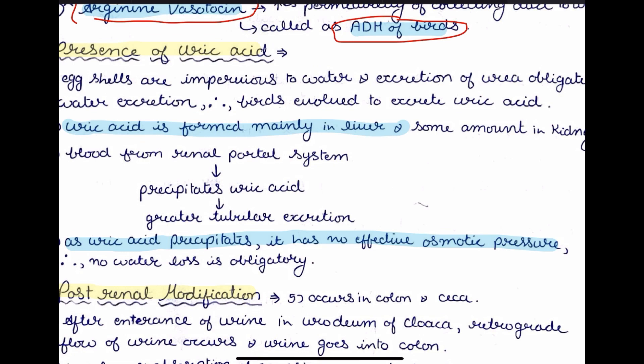The renal portal system is responsible for the maximum amount of blood flow in the kidney, and whenever there is increased blood flow there is increased concentration of uric acid. Because of this increased concentration, the uric acid starts to precipitate, and as it precipitates more uric acid follows and also precipitates. A unique property of uric acid is that it has no effective osmotic pressure because it is a precipitate not present in solution — that is why water loss is not obligatory in birds.